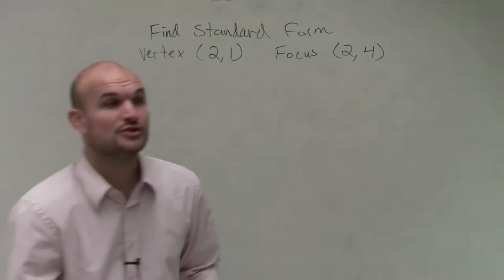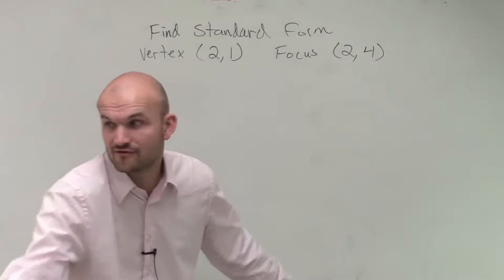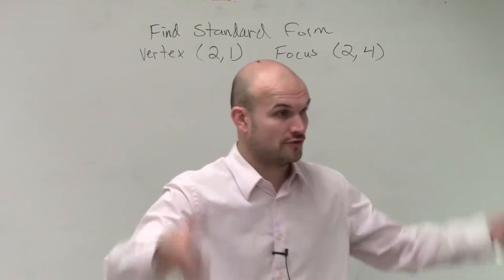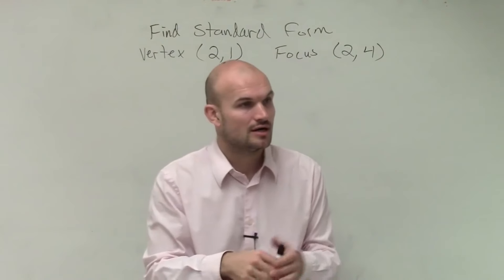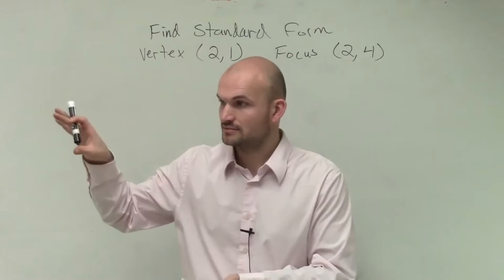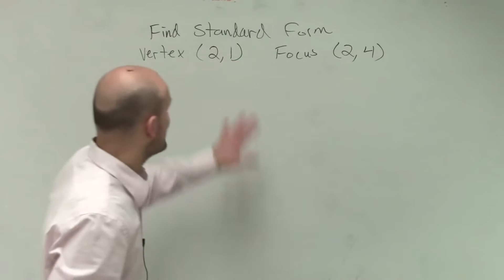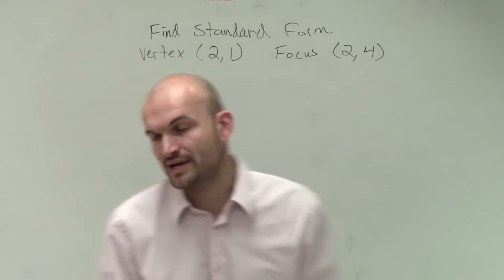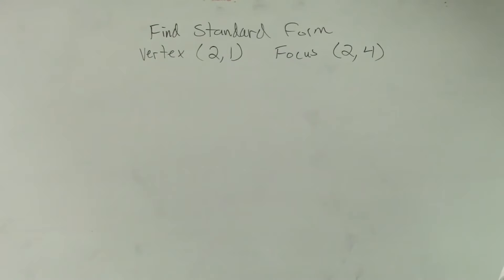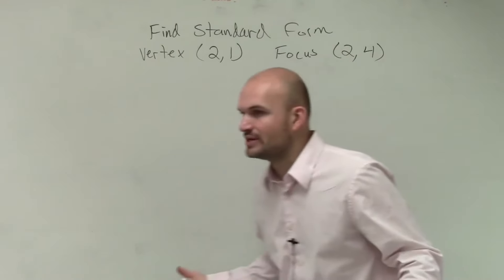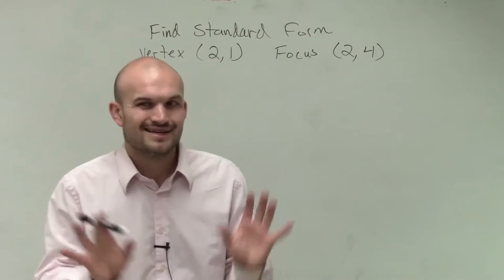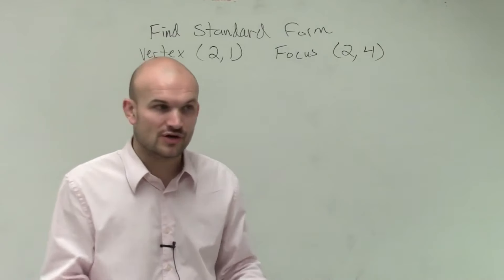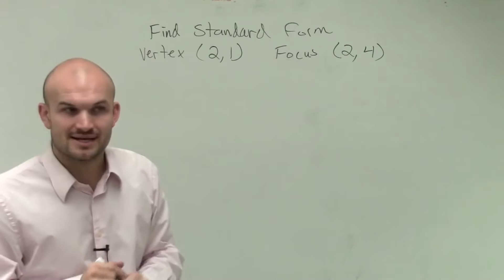We've talked about two different formulas — one for a vertical parabola that opens up or down, and one for a horizontal parabola. Right now they're saying: find the standard form of the equation if we have a vertex at (2, 1) and a focus at (2, 4). I need to determine which formula to use. The best thing to do first is to plot the points and see which one makes sense.